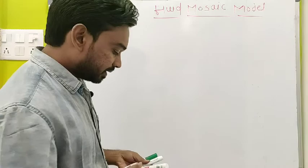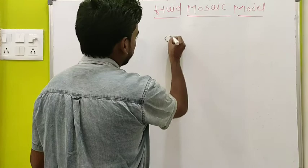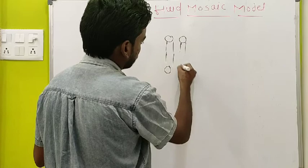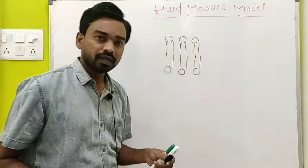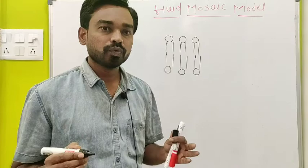According to Singer and Nicholson, the plasma membrane is nothing but the phospholipid bilayer. The chemical composition of the plasma membrane is a phospholipid bilayer — each molecule is made up of phospholipid. It is an amphiphatic molecule. Amphiphatic molecules are those molecules which have a polar as well as a non-polar group.